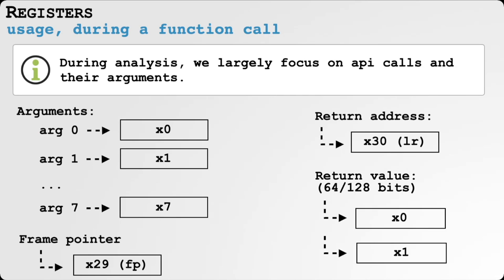In the context of a function call, the Application Binary Interface, or ABI, for ARM64 on macOS defines how registers are used. The first eight arguments passed to a function are found in X0 through X7 — so the first argument is in X0, the second in X1, and so on. The stack frame pointer is in X29, the return address in X30 (the link register, or LR). When the function returns, its return value is in X0, or also X1 if it's a 128-bit value.